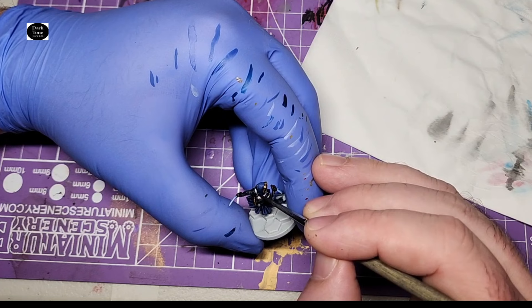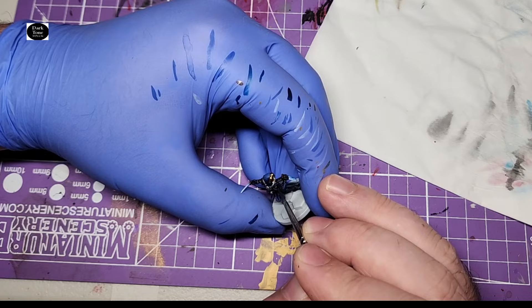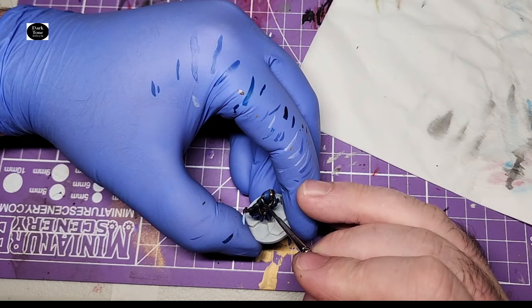And then for the finishing touch on him, I went over the metal and gold with a wash of Dark Tone. I wasn't planning on highlighting these any further, so I was careful to make sure there was no pooling and it flowed to where I wanted it.